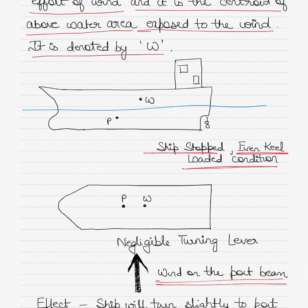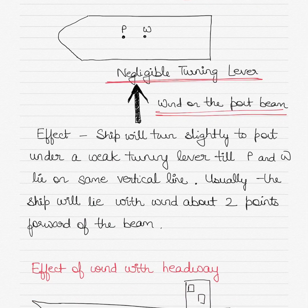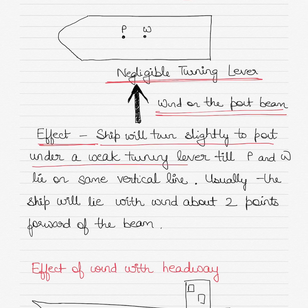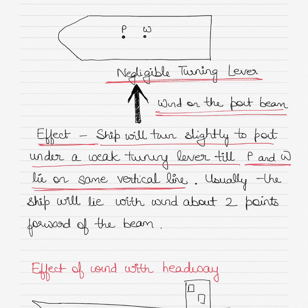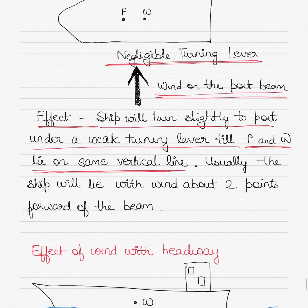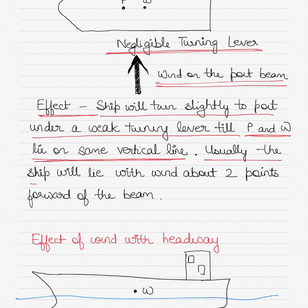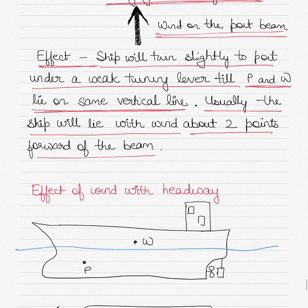In the first case, where the ship is stopped and on even keel, there is a negligible turning lever because the distance between the pivot point and the windage point is not much. The effect is that the ship will turn slightly to port under a very weak turning lever. Until the pivot point and windage point lie on the same vertical line, the ship will turn to port. Usually in such cases, the ship will lie with the wind about two points forward of the beam.